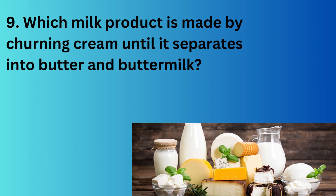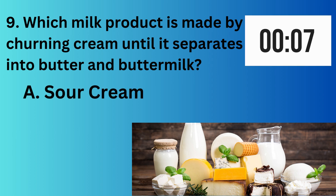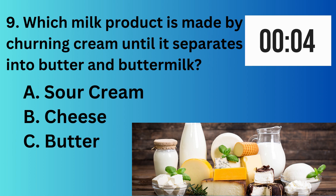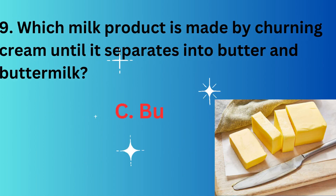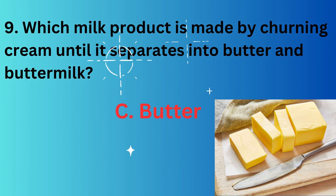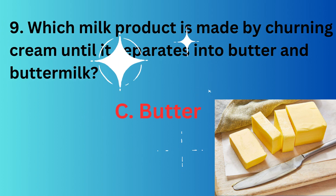Which milk product is made by stirring cream until it separates into butter and buttermilk? A. sour cream, B. cheese, C. butter, D. yogurt. The correct option is C, butter.